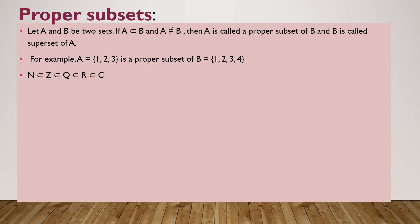Next we have proper subsets. Let A and B be two sets. If A is a subset of B and A is not equal to B, that means there must be an element lying in B which is not lying in A. Then we can say that A is a proper subset of B. For example, if we take A as {1, 2, 3} and B as {1, 2, 3, 4}, then there is an element 4 which is in B but not in A.